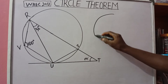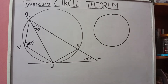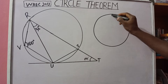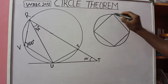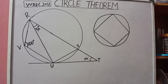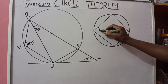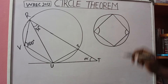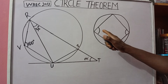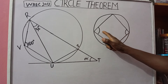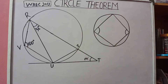Recall the cyclic quadrilateral theorem — a situation whereby you have a quadrilateral inside a circle. When you have a quadrilateral inside a circle, it is called a cyclic quadrilateral. The theorem says that the opposite angles are supplementary; that is, the opposite angles of a cyclic quadrilateral add up to 180 degrees.